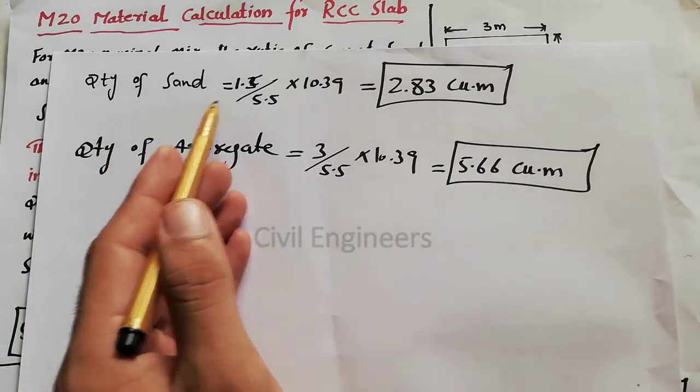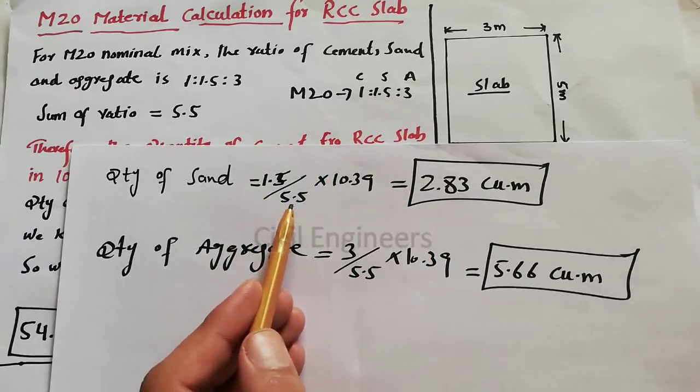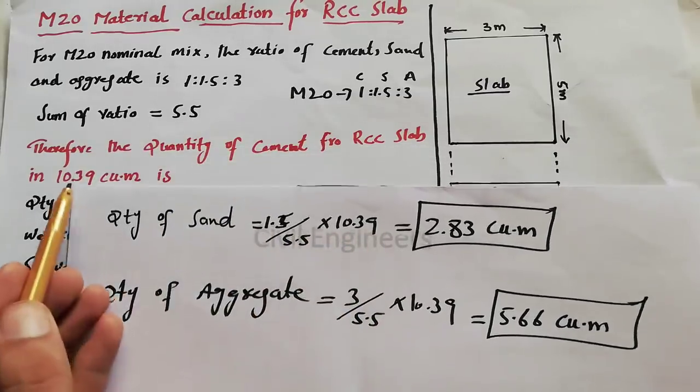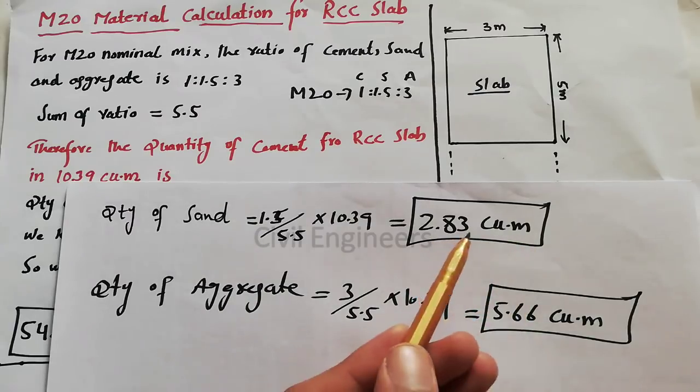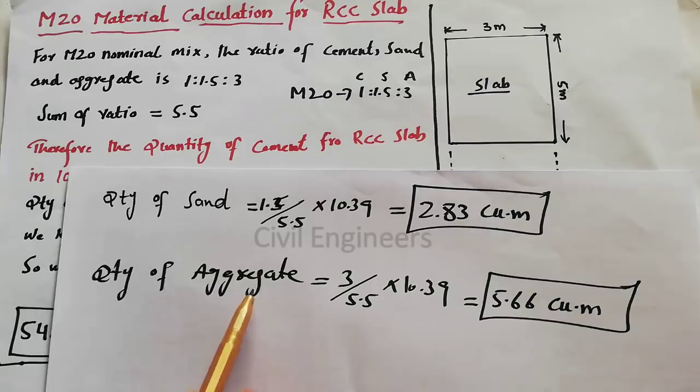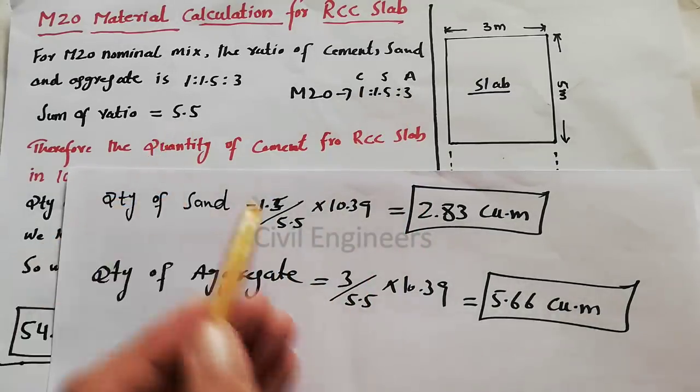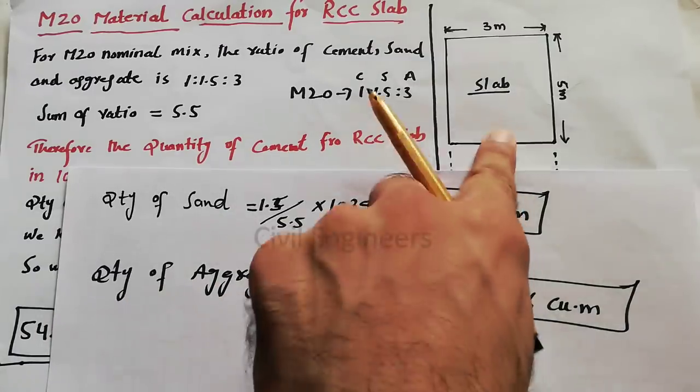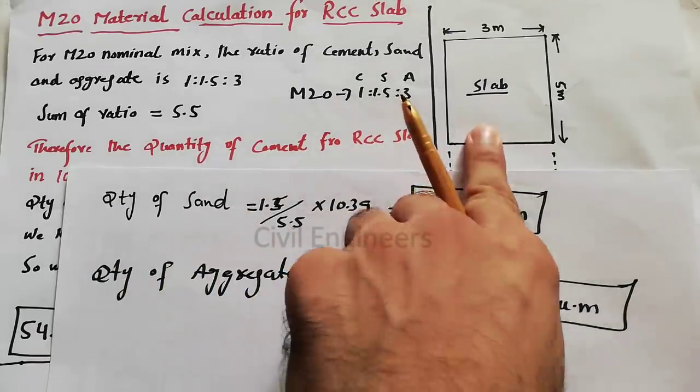Now quantity of sand. 1.5 divided by 5.5, where 1.5 is the ratio of sand, 5.5 is sum of ratio, multiply 10.39, same like this one. It gives us 2.83 cubic meter volume of sand. Quantity of aggregate: 3, sum of ratio is 3 for aggregate, divided by 5.5 sum of ratio, multiply 10.39, equals 5.66 cubic meter crush or aggregate are required for this slab.